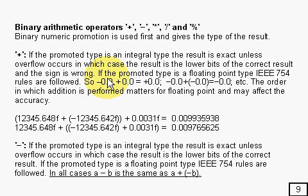If the promoted type is a floating point type, so it's float or double, then the normal IEEE 754 rules follow. So things like minus zero plus zero is plus zero, and minus zero plus minus zero is minus zero. The other thing to note is that with any sort of floating point thing, the order which you do things can affect the accuracy. And here's a little example to demonstrate that.